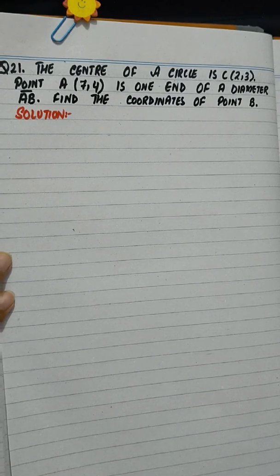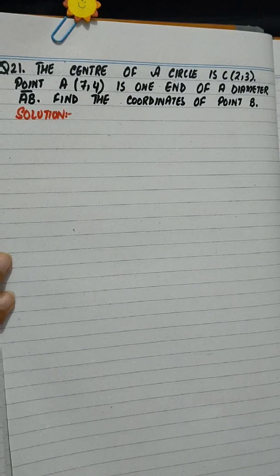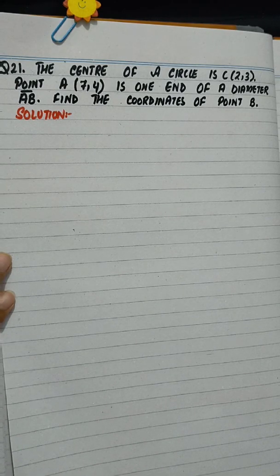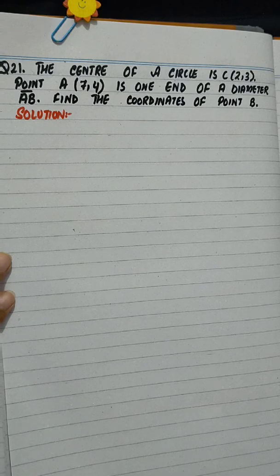Now question number 21. The center of a circle is C(2,3). Point A(7,4) is one end of a diameter AB. Find the coordinates of point B.